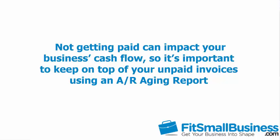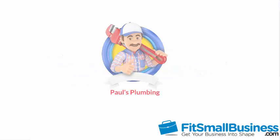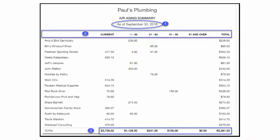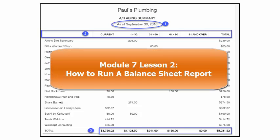To help demonstrate the components of the AR aging report, we will take a look at the report for a fictitious company, Paul's Plumbing. Here you will find the AR aging summary report as of September 30, 2016 for Paul's Plumbing. Similar to the Balance Sheet report, this report is as of a specific date. Click here to watch our video tutorial on how to run a balance sheet report.